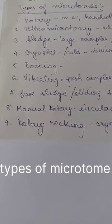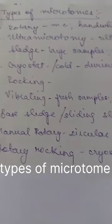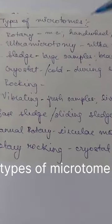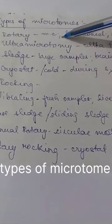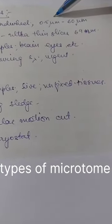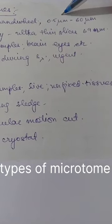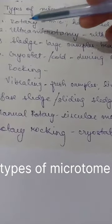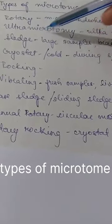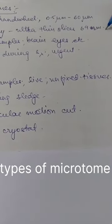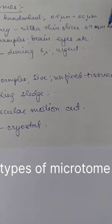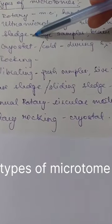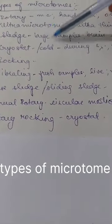This is basically a video for viva preparation, so just one-liners for each. The rotary microtome is the most common type; it has a hand wheel and the section size is 0.5 micrometers to 60 micrometers. Ultra microtome — the name says it all — produces ultra thin slices of about 69 nanometers, very fine slices. The third type is the sledge microtome, used for larger samples like brain and ophthalmology specimens.